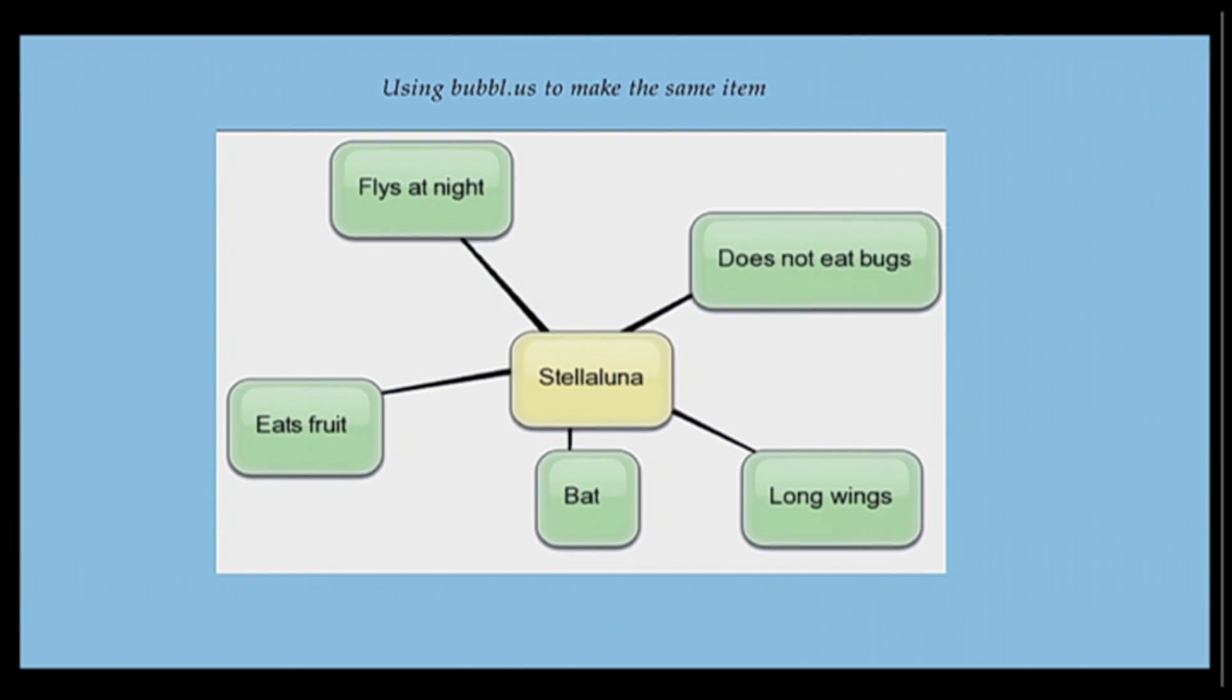Here's an example of using a website called bubble.us to make the exact same item. So you can see that we haven't changed the assignment at all. We go to bubble.us and the students create their own mind map and they just fill in. They start filling in the bubbles.